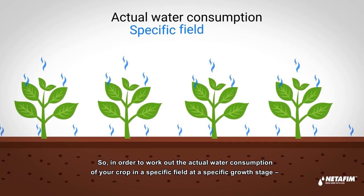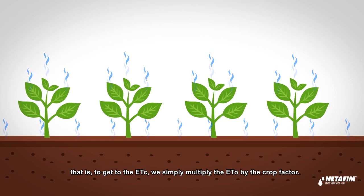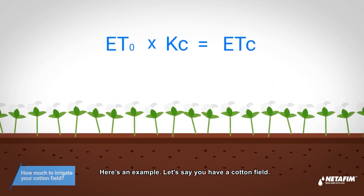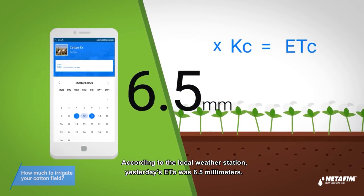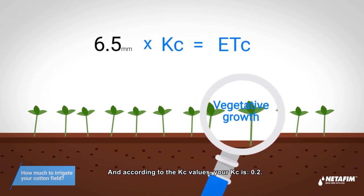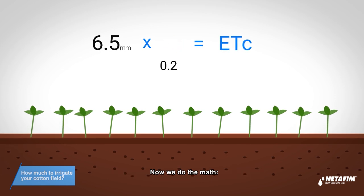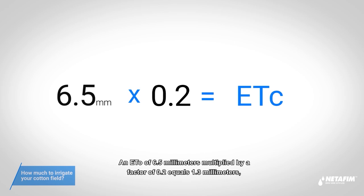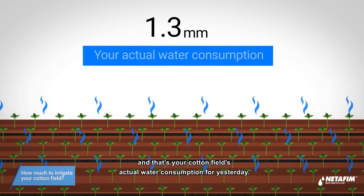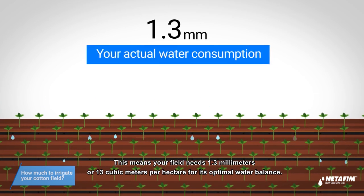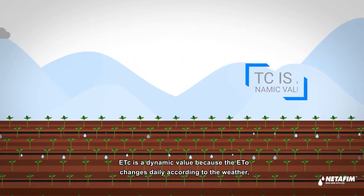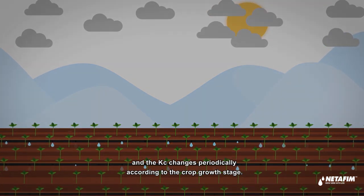To get the actual water consumption of your crop — the ETc — we multiply ETo by the crop factor. Here's an example: say you have a cotton field. Yesterday's ETo from the local weather station was 6.5 mm. The cotton is at the vegetative growth stage, and the Kc is 0.2. So: 6.5 mm × 0.2 = 1.3 mm. That's your cotton field's actual water consumption — 1.3 mm, or 13 cubic meters per hectare — for yesterday's optimal water balance.